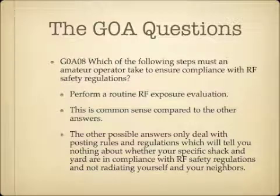Which of the following steps must an amateur operator take to ensure compliance with RF safety regulations? The answer is to perform a routine RF exposure evaluation. The other possible answers deal with posting rules and regulations, which won't tell you whether your station is actually radiating RF toward yourself and neighbors. The FCC sets guidelines in FCC OET Bulletin 65. The step you must take as an amateur to ensure compliance is to perform a routine RF exposure evaluation.